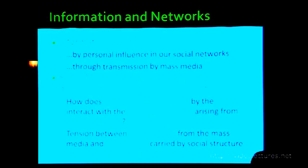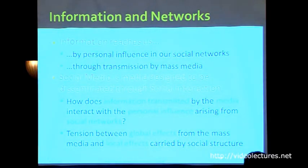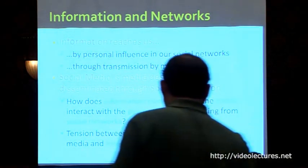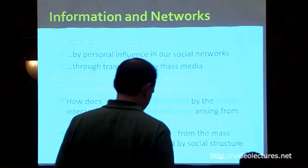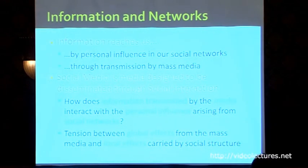If we think about how information reaches us as individuals, there are two dichotomous ways we get information. One is through personal influence of our social networks — we hear stuff from our friends. The other way information reaches us is through transmission by the media, by the mainstream media, through the web and so on.